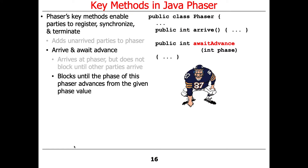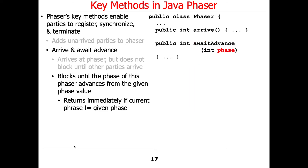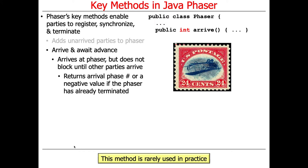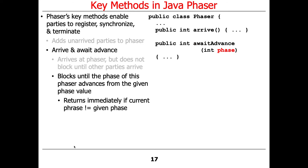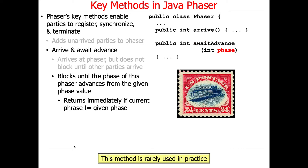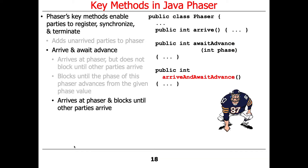There's another method called awaitAdvance(), which will block until the phaser advances from the given phase value. It returns immediately if the current phase is not equal to the given phase. Remember that arrive() returned the phase number, and awaitAdvance() takes a phase number — you'll see how that gets used in a second. This method is also rarely used.